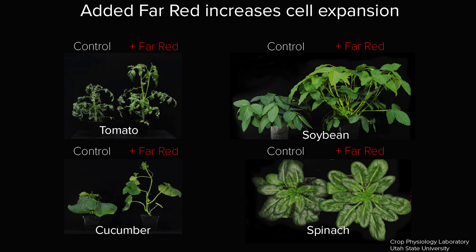Studies show that whether it's tomato, cucumber, or soybean, plants get very stretched and gangly with the addition of a relatively small amount of far red. For indoor growers this is a big negative, because our plants are not going to be dense and compact, which is what we want to get a high yield from a relatively small space.